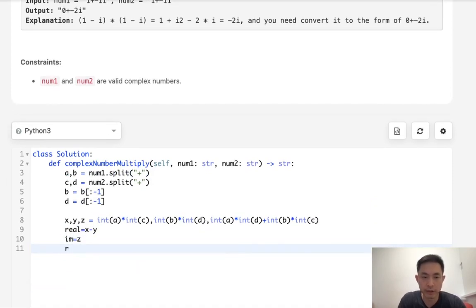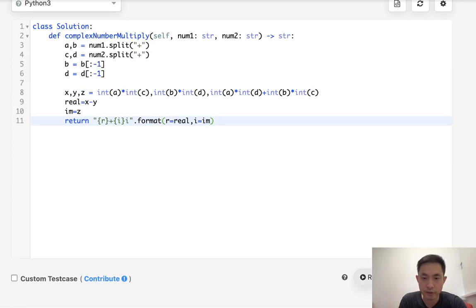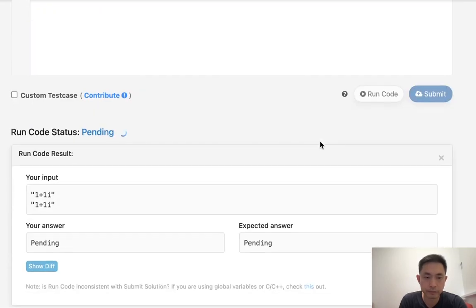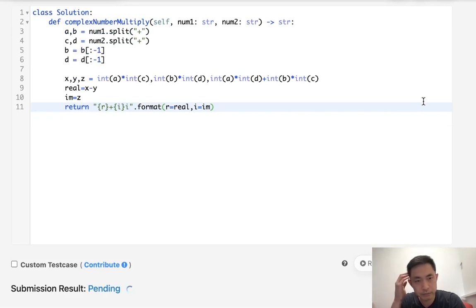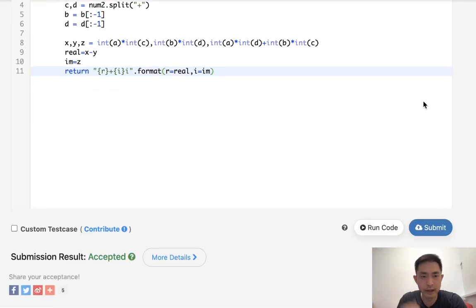So really all we need to do now is return it in the string format that we want. This would be the real part plus the imaginary part i. So r is equal to real and i is equal to im. And let's make sure this works. Let's go ahead and submit that. And accepted.